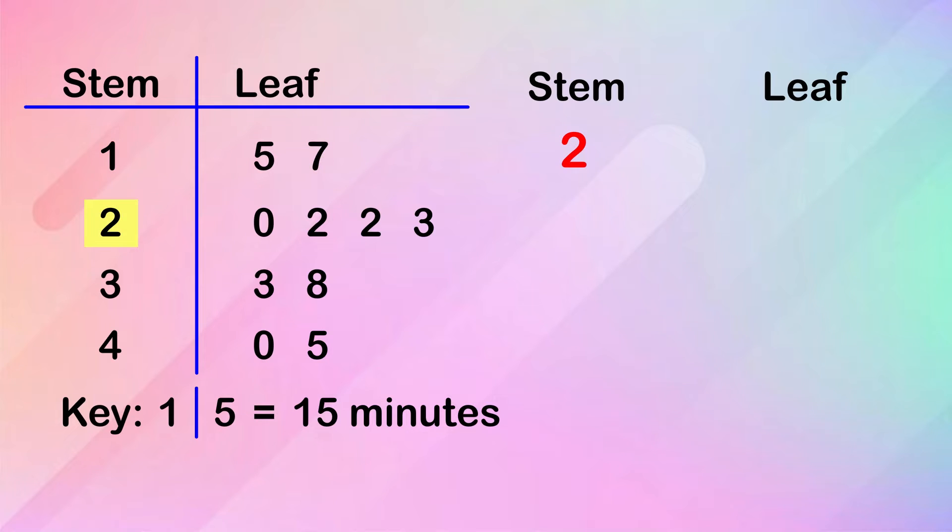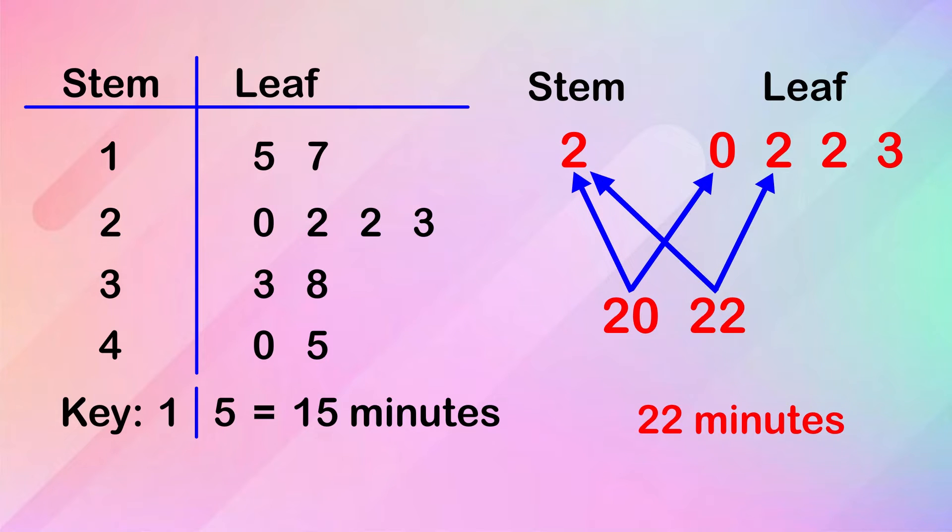Moving on to the next stem, we have 2 as the stem, and 0, 2, 2, and 3 as the leaves, which are read as 20 minutes, 22 minutes, 22 minutes, and 23 minutes.